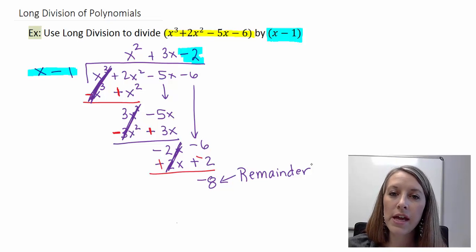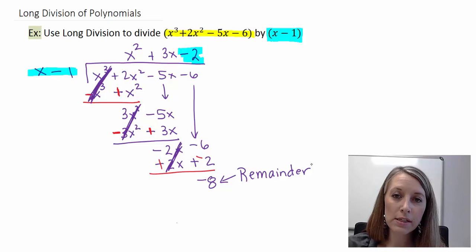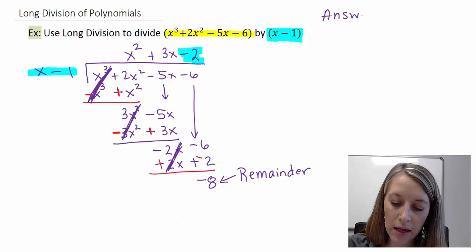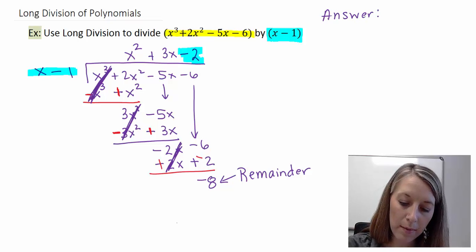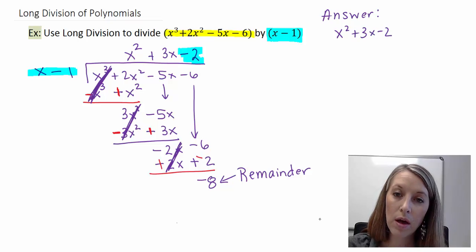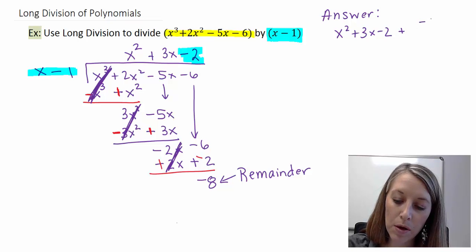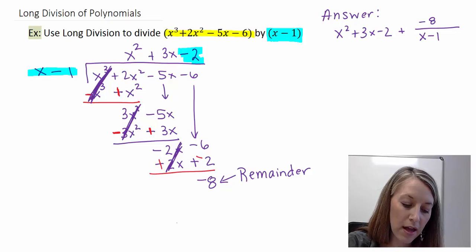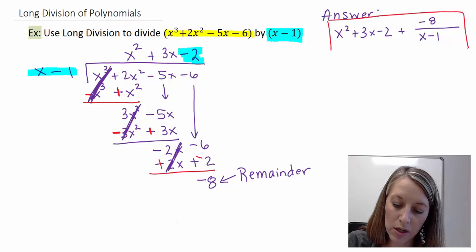That's fine when we're just doing polynomial division. Now you need to pay attention to how the problem specifically asks for the answer. If it just asks you to long divide, then my answer is the quotient up top, which is x squared plus 3x minus 2. But we also need to include our remainder. We put the remainder over the divisor, over x minus 1. So if it specifically asks for long division, this would be your answer.